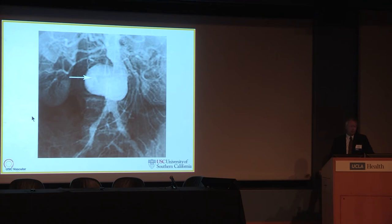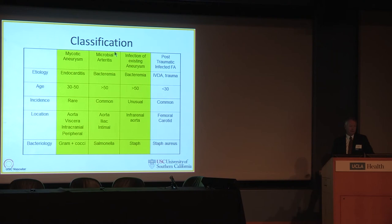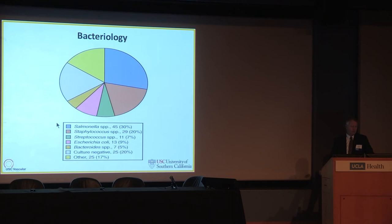Moving on to aortic infections — the classification includes mycotic aneurysms, microbial arteritis, and infection of an existing aneurysm. Although salmonella is commonly discussed as the most common organism, at our institution MRSA is really the bad bug we're seeing now in this regard.